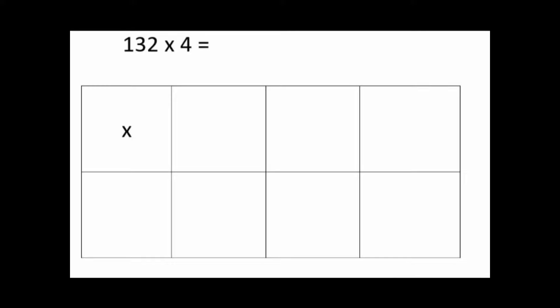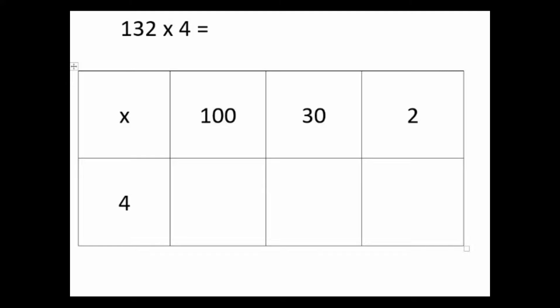So this time we're going to be multiplying three digits by one digit. Draw the grid out, you just need one extra column of squares and partition your number. Pause the video while you're doing this. Your partition number should look like this: 100, 30 and 2 in the top and 4 goes underneath the multiplication sign. Now pause the video while you complete these multiplications.